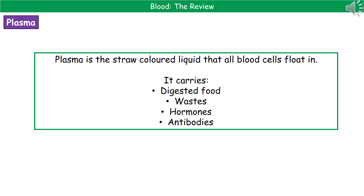The final part of our blood is the bit that everything else floats around in, which is a straw-coloured liquid called plasma. It's not just the medium allowing cells to be transported around the body — it's also capable of carrying other things. Digested food, waste products like carbon dioxide, hormones, and antibodies are all transported in our plasma. Make sure that at the end of this review you know the four different parts of the blood, their roles, and their adaptations where needed.